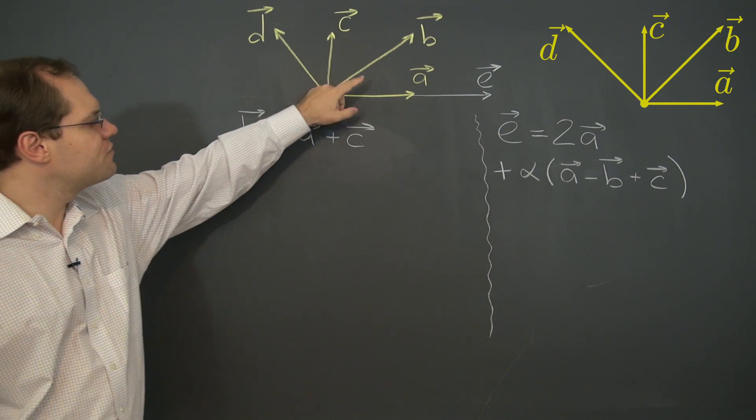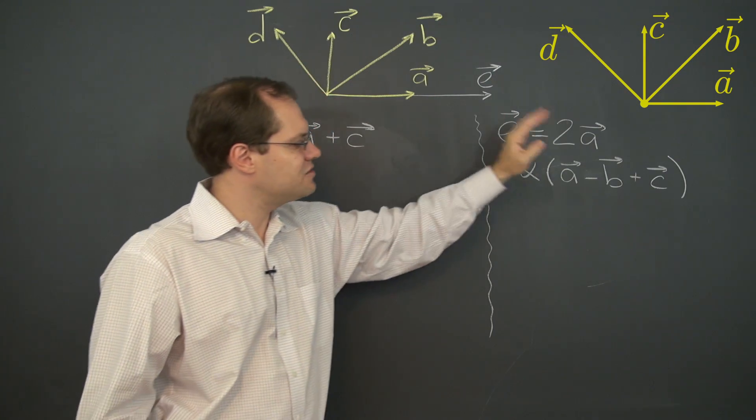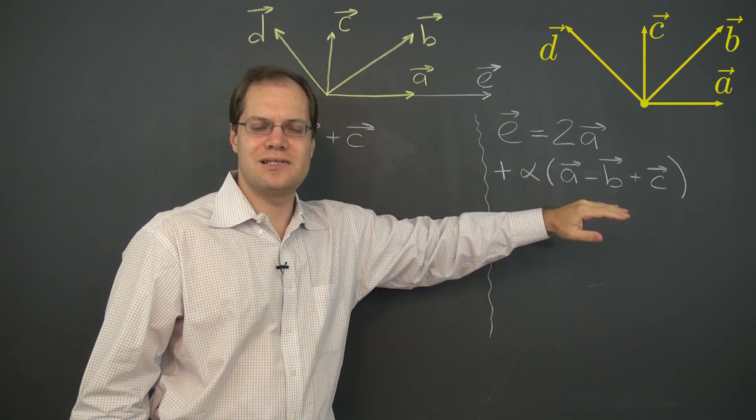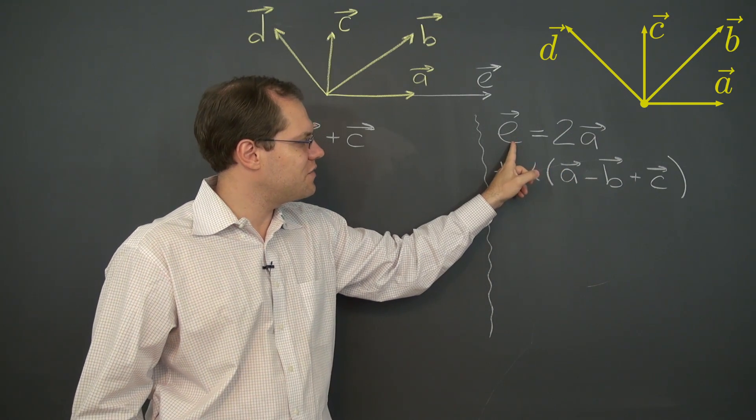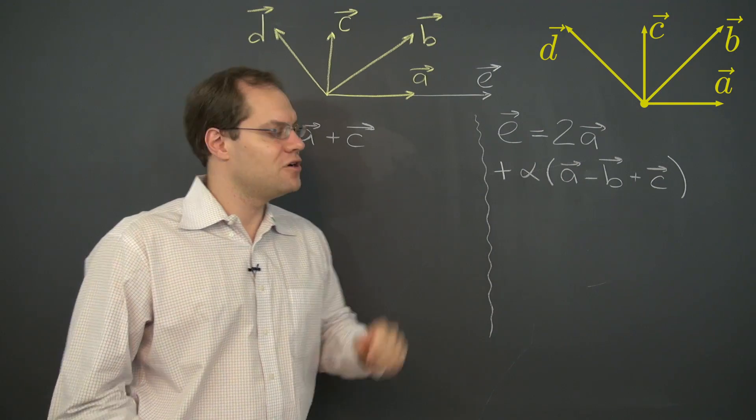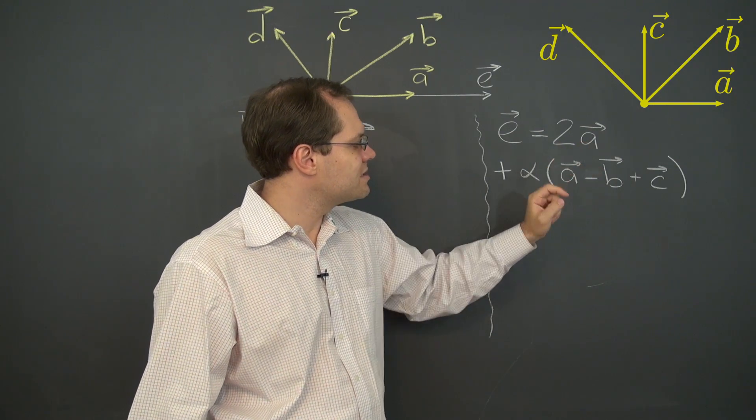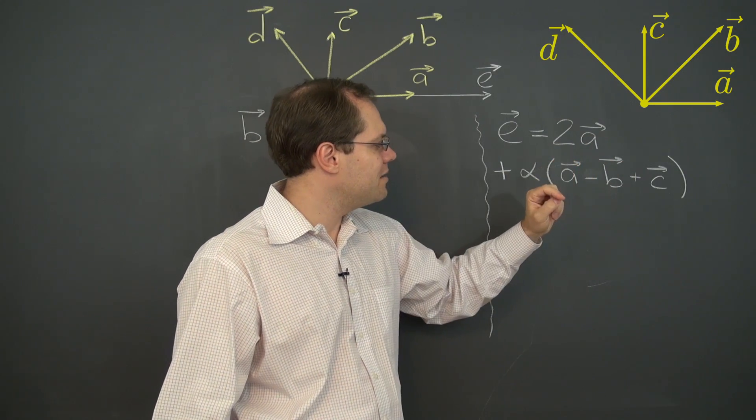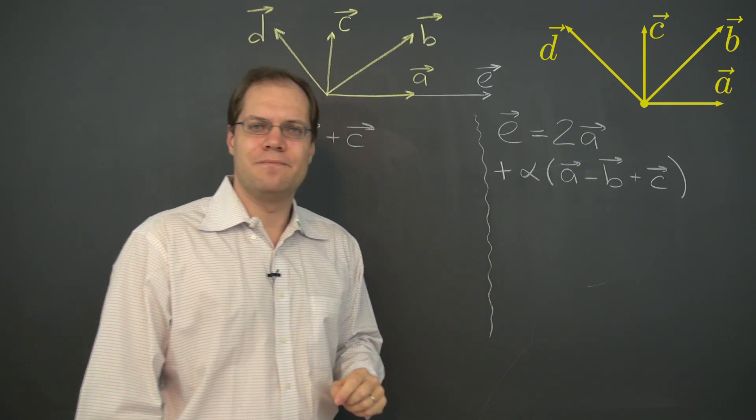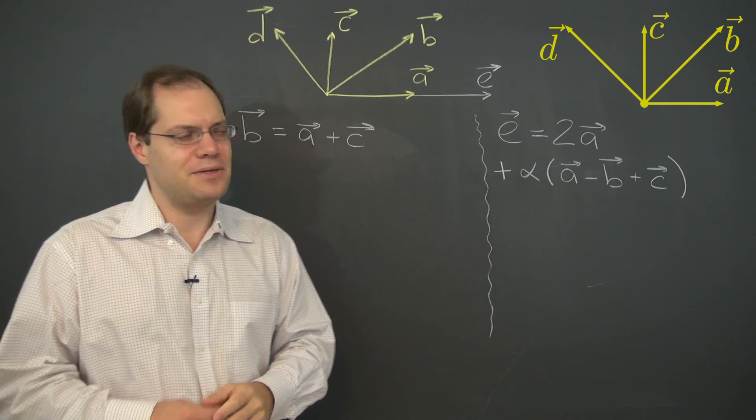Great. So, we observed one relationship among the vectors A, B, C, and D and that led to this term. This non-trivial zero doesn't change the fact that the linear combination evaluates to E, but does deliver all sorts of different linear combinations. Because it equals 2 plus alpha minus alpha B plus alpha C. So, different values of alpha result in different linear combinations.